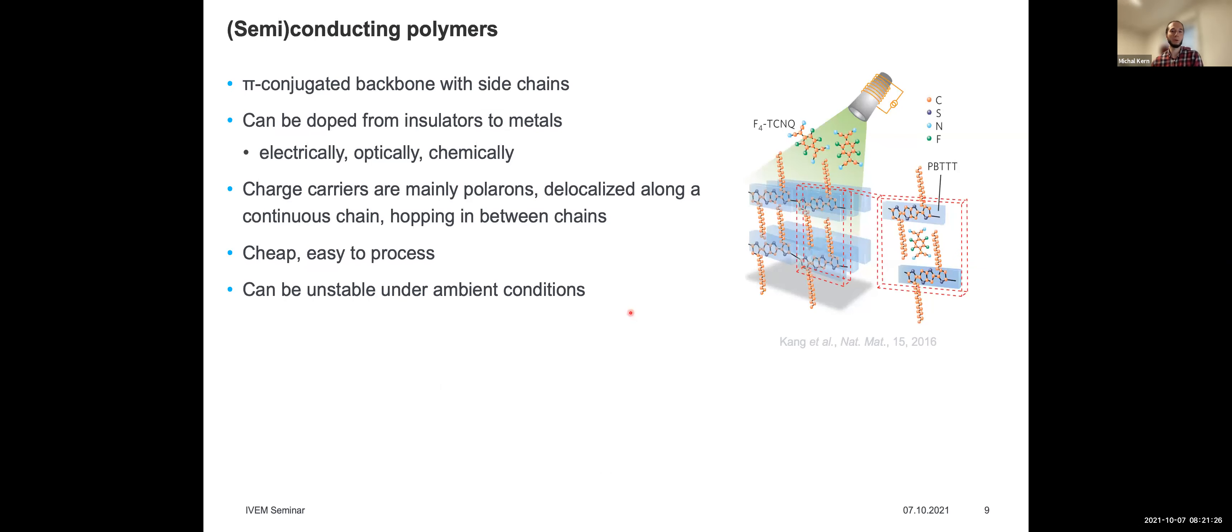Basically, our idea was to take advantage of the easy processability of organic semiconductors and molecular quantum bits and essentially mix them together, thus creating a hybrid material where we have both molecular quantum bits and some free charge carriers. As our host material of choice, we chose semiconducting polymers, which are essentially very long molecules with a pi-conjugated backbone and alkyl side chains. Their conductivity can be relatively easily controlled by a variety of methods: electrically, optically, or chemically.